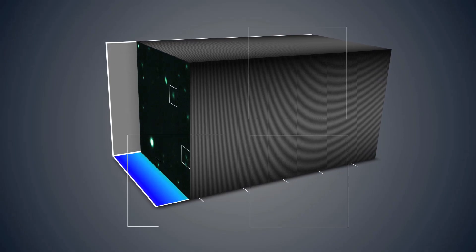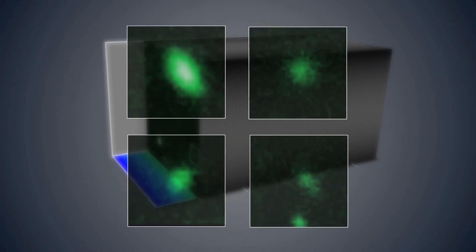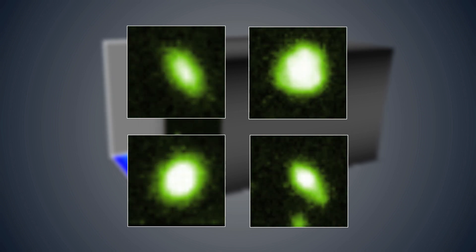For closer galaxies, MUSE can even look at how they're rotating and the way in which their properties vary from place to place.